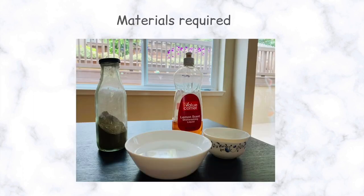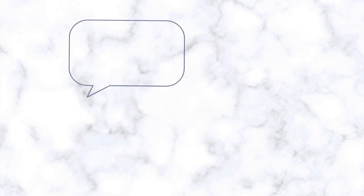The materials you need for the first experiment are one or two tablespoons of black pepper, one cup of water, one tablespoon of dishwashing liquid, and one small empty bowl. Feel free to pause the video now and gather the ingredients.